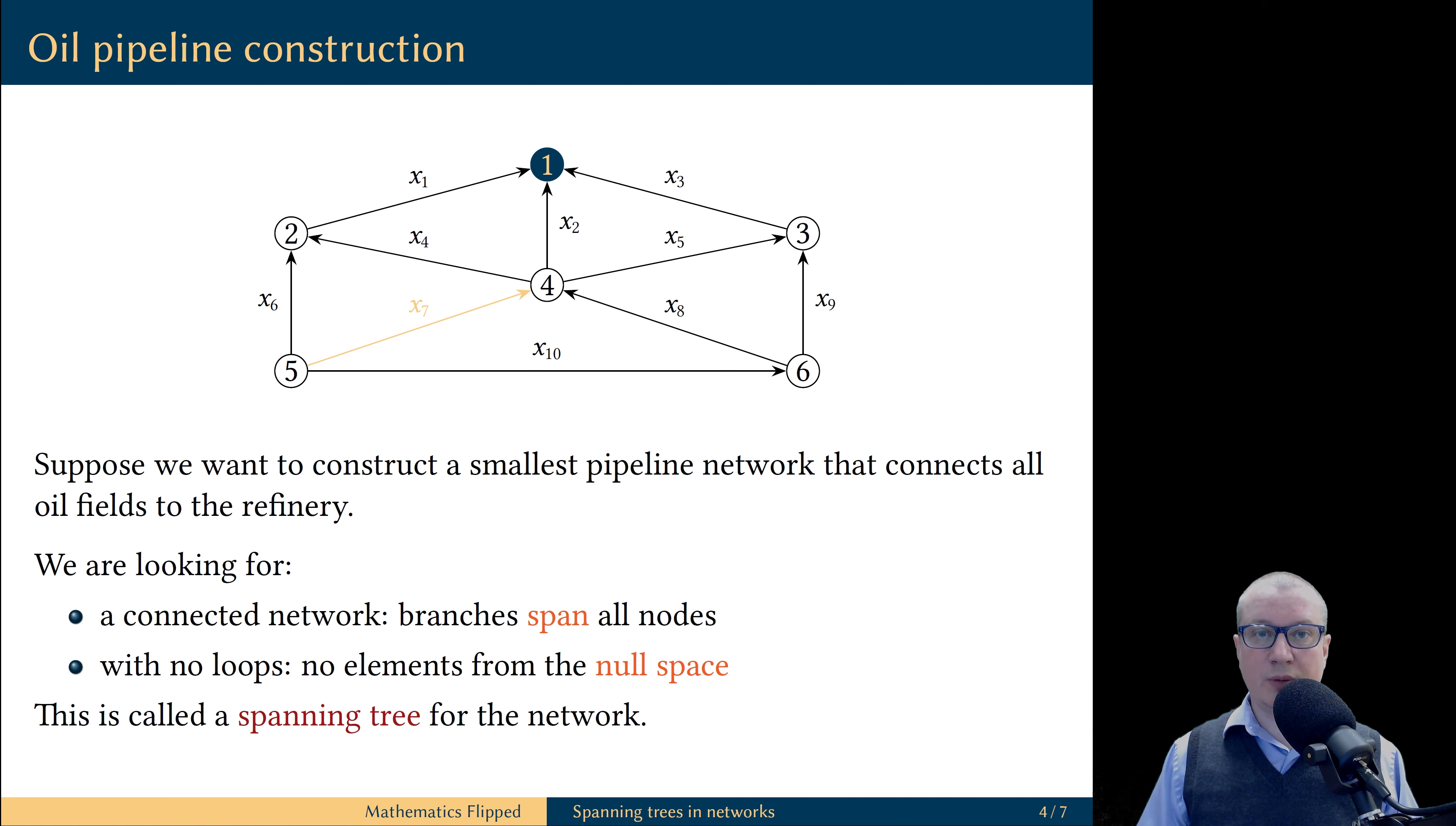A network with these properties is called a spanning tree for the original network. The tree means there are no loops in the network and spanning property means that it is a connected network. The branches span all nodes of the network. So, our goal is to construct a spanning tree for this network.